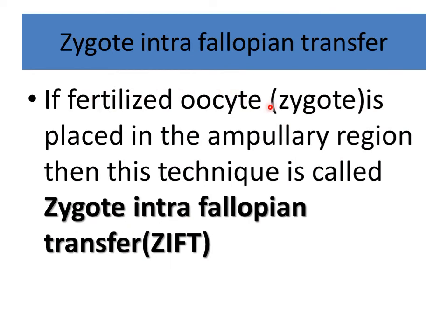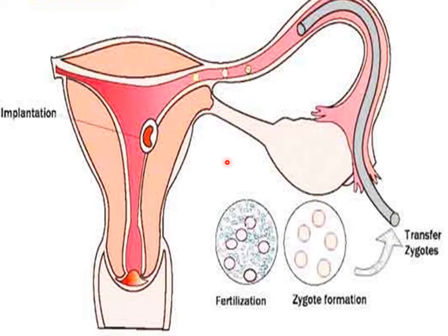The next technique is Zygote Intrafallopian Transfer (ZIFT). If a fertilized oocyte, known as a zygote, is placed in the ampullary region, then this technique is called Zygote Intrafallopian Transfer. Here you can see fertilization occurs in the test tube, or outside the uterus, and then the zygote is transferred via catheter.